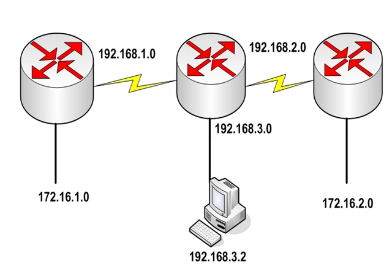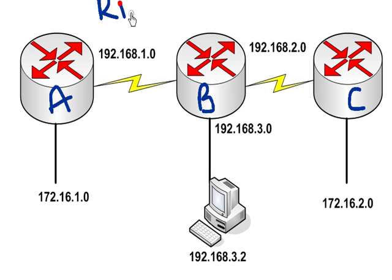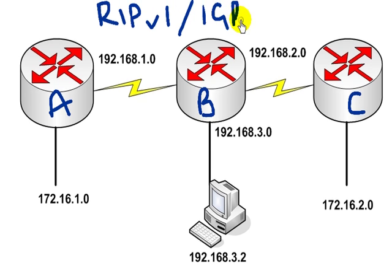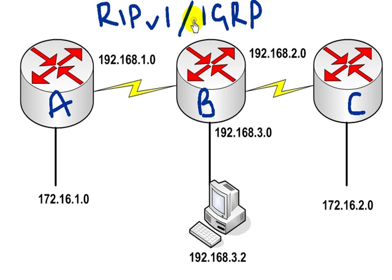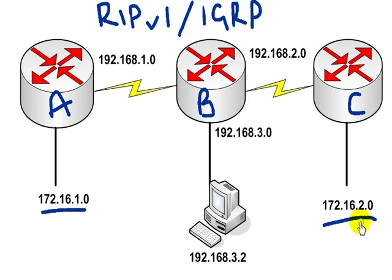Alright, so we're going to use a hypothetical network with routers A, B, and C. On this particular network we're using RIP version 1 — no longer covered in the CCNA — and the same goes for IGRP. So you don't need to worry about configuring it or explaining how it works. What we have here is your typical network setup: a 172.16.1 network on one side and a 172.16.2 network on the other.